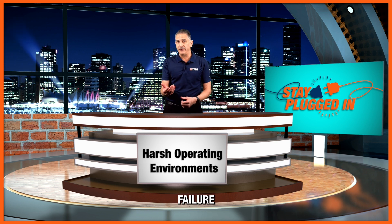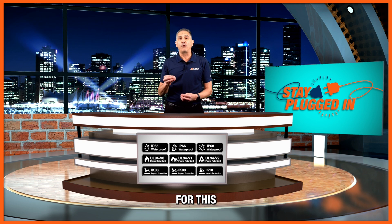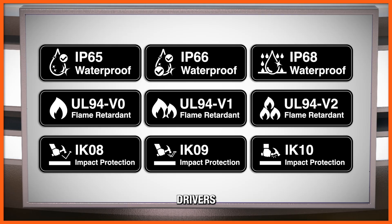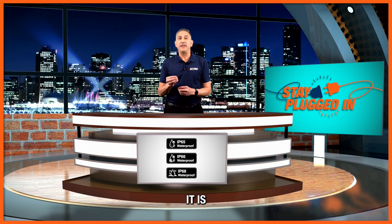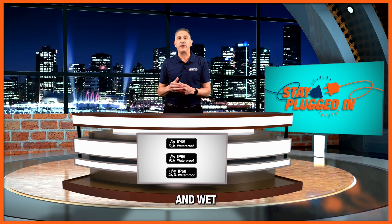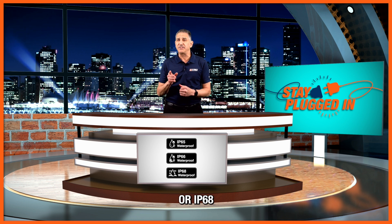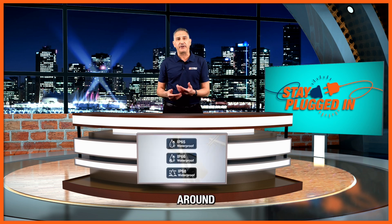An additional cause of failure has to do with harsh operating environments where the IP rating is inadequate for the application. The vast majority of drivers used in outdoor environments must possess an IP, or ingress protection, rating of IP65 or IP67 to ensure suitability for harsh operating environments. It is suggested to utilize a minimum of an IP65 driver for damp and wet environments, and an IP67 or IP68 rating where the driver may be temporarily submerged underwater — typically for around 30 minutes.